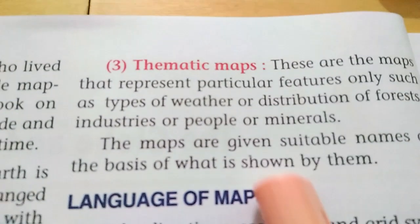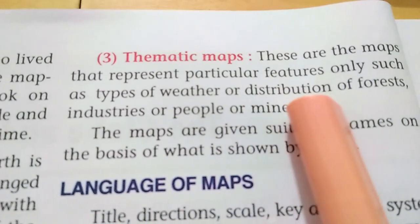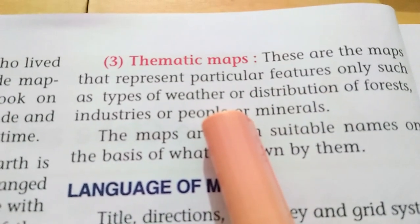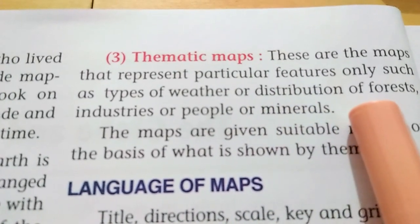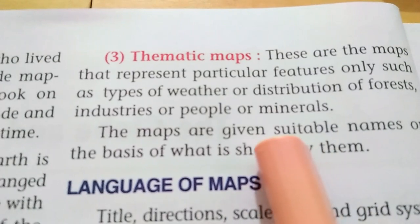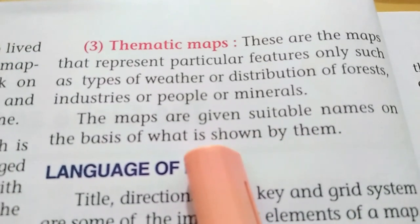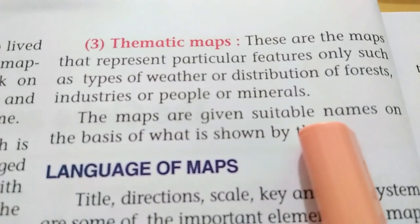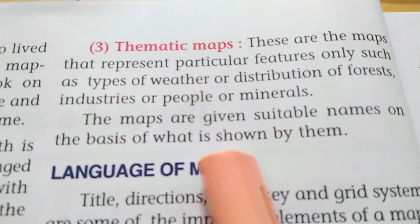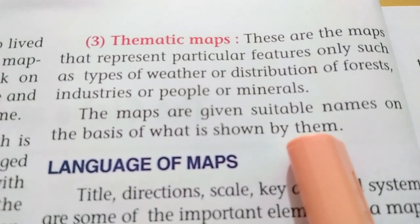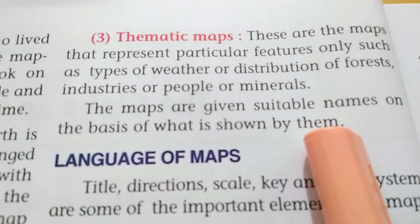Thematic maps: these are maps that represent particular features only, such as types of weather or distribution of forests, industries, and similar things. Maps are given suitable names on the basis of what is shown by them — that is, based on the particular features they represent.